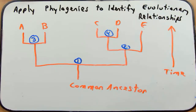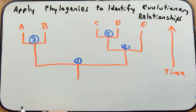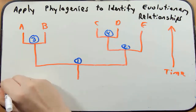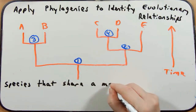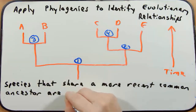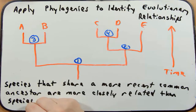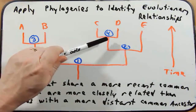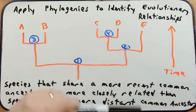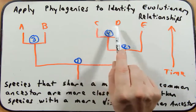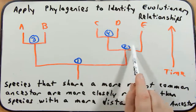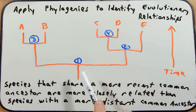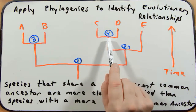Species that share a more recent common ancestor are more closely related than species with a more distant common ancestor. Since C and D share a recent common ancestor at node four, they are more closely related to each other than either one is to E. Even though C, D, and E share a common ancestor, that ancestor is more distant. C, D, and E are more closely related to each other than they are to A and B, because they share a more recent common ancestor with each other than they do with A and B.